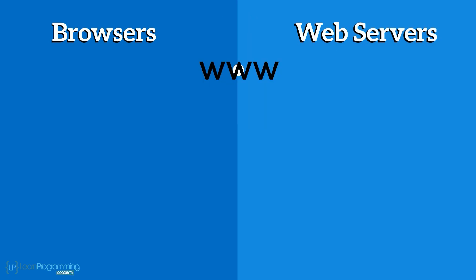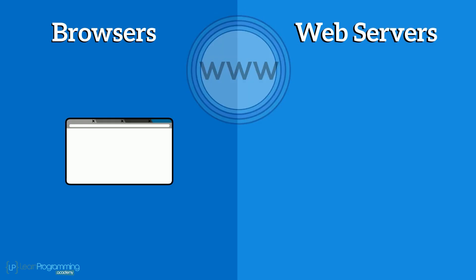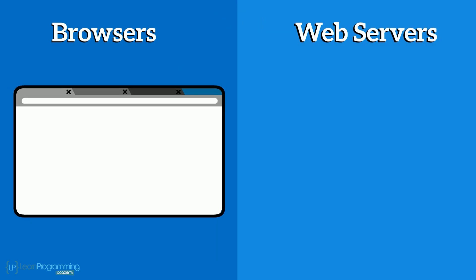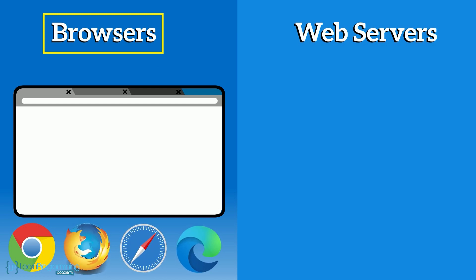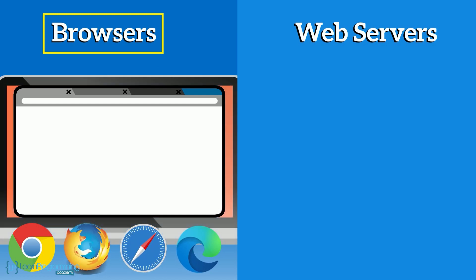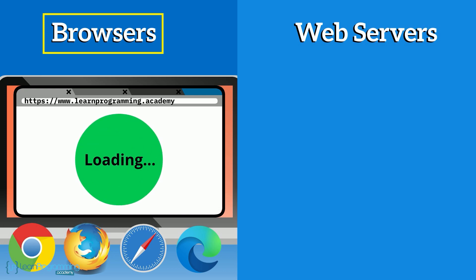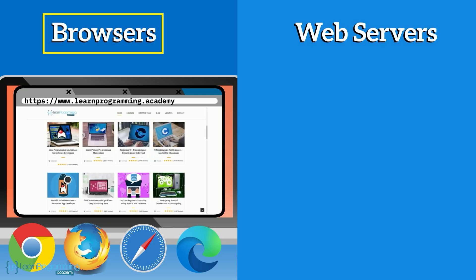There are two very important parts to the web: browsers and web servers. Software known generically as a web browser or browser, such as Chrome, Firefox, Safari, Edge, etc., runs on your or my device, and has the responsibility of obtaining things, typically web pages, as you and I request them.